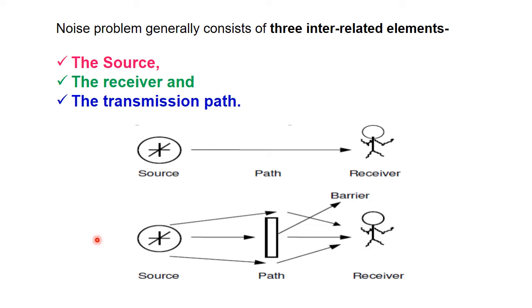Noise problems generally consist of three interrelated elements: the source, the receiver, and the transmission path. A diagram explains these three elements — any kind of source creates noise, and the sound waves travel a path to the receiver. This path is usually air or at times water. At times this path is clear, and at times there is a barrier in the path.